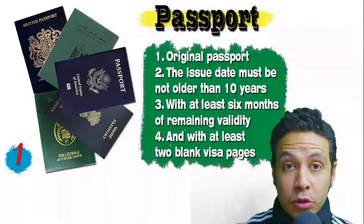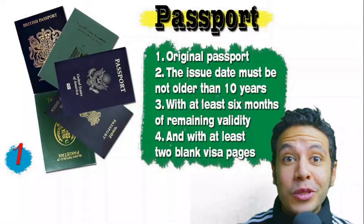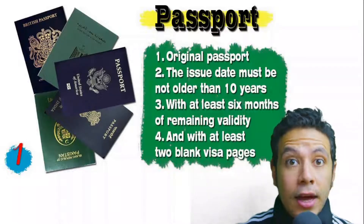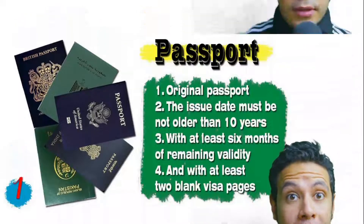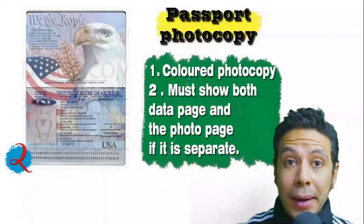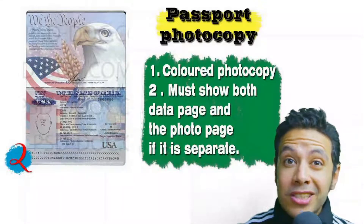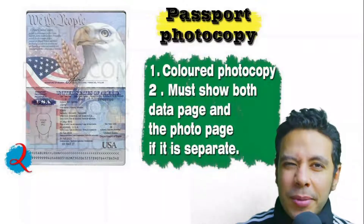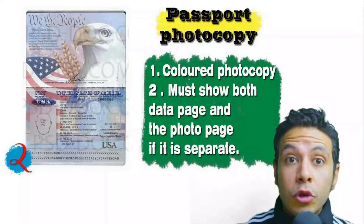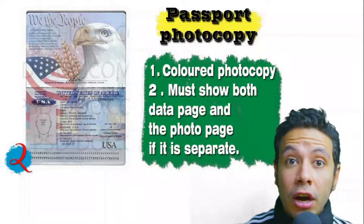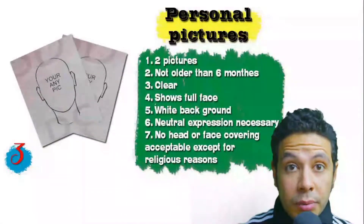For required travel documents: your passport must be original, not older than 10 years, with at least six months of remaining validity and at least two blank visa pages. In many cases you will also need a photocopy of your passport — preferably colored — showing both the data page and the photo page. In some cases you may be required to photocopy every page.